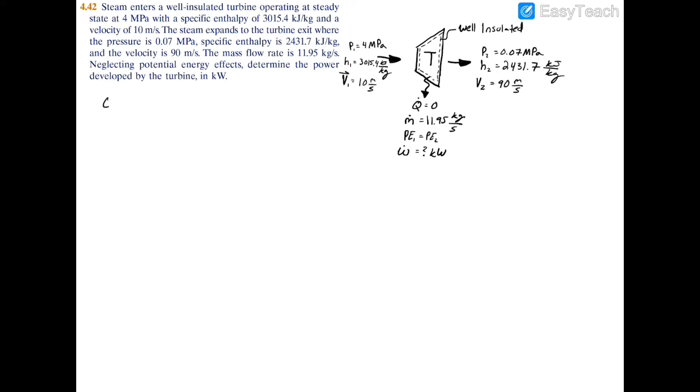So we're going to have that zero equals the heat transfer minus the power plus the mass flow rate times basically what comes in minus what comes out. So you have the enthalpy at one minus the enthalpy at two plus the velocity at one squared minus the velocity at two squared divided by two.